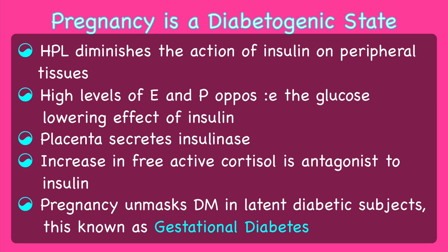Before explaining the pathophysiology of GDM, it is important to describe the effect of pregnancy on glucose metabolism. Pregnancy is a diabetogenic state because the placenta produces many hormones that are antagonistic to insulin action. Human placental lactogen diminishes the action of insulin on peripheral tissues. High levels of estrogens and progesterone oppose the glucose-lowering effect of insulin. The placenta also secretes an enzyme called insulinase, and an increase in free active cortisol is also antagonistic to insulin. These are all the reasons why pregnancy unmasks diabetes mellitus in latent diabetic subjects — this is known as gestational diabetes.